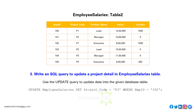Write an SQL query to update a project detail in the employee salaries table. Use the UPDATE query to update data in the database table. UPDATE employee_salaries SET project_code = 'P3' WHERE employee_ID = 102.